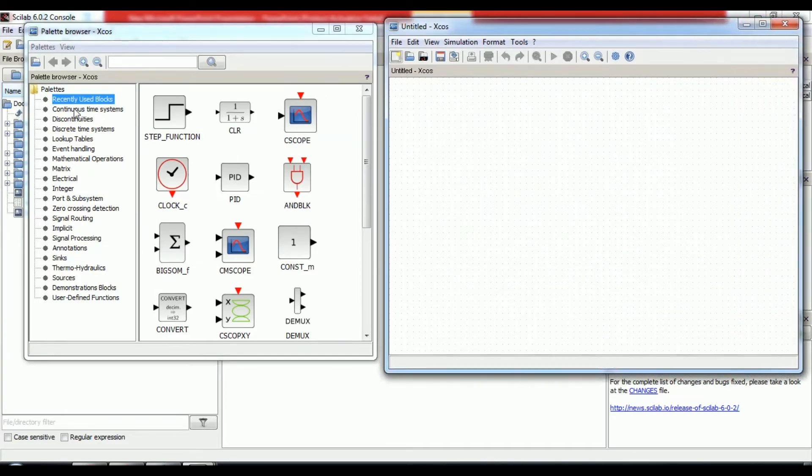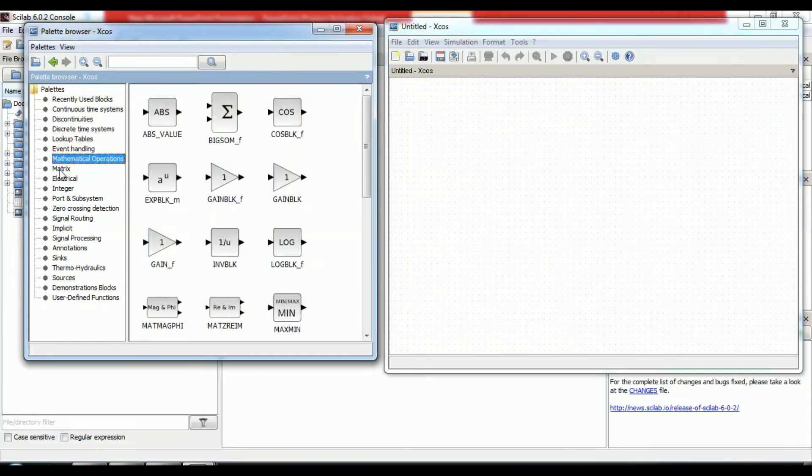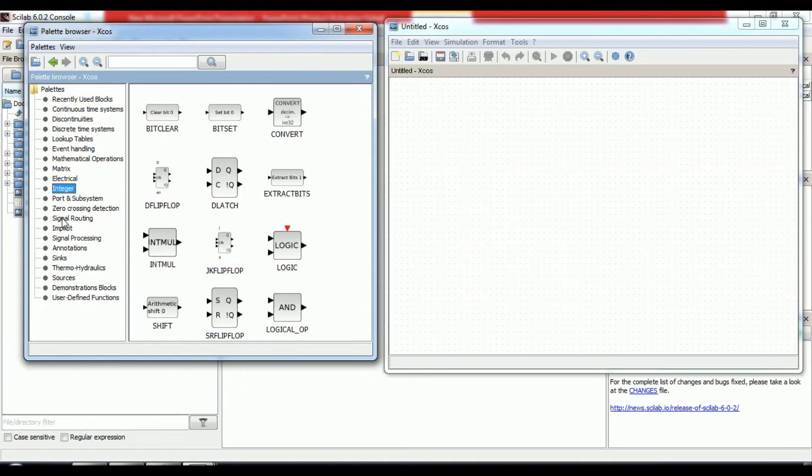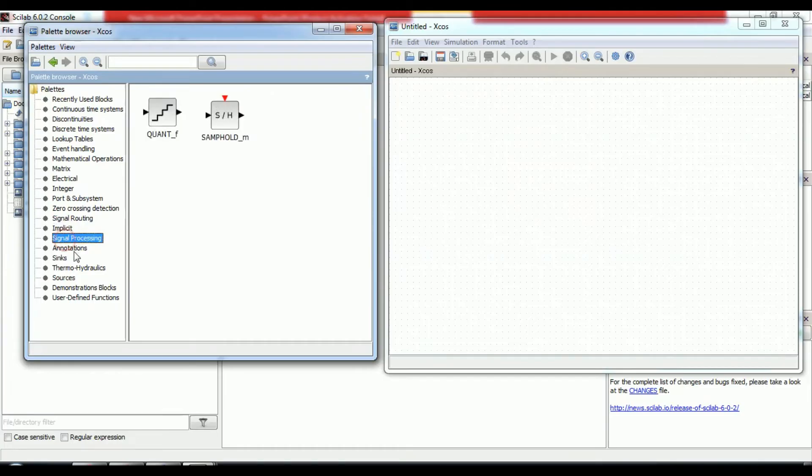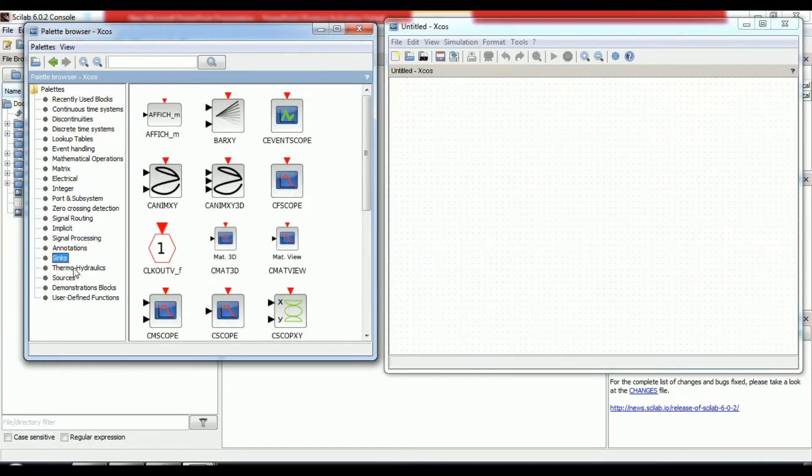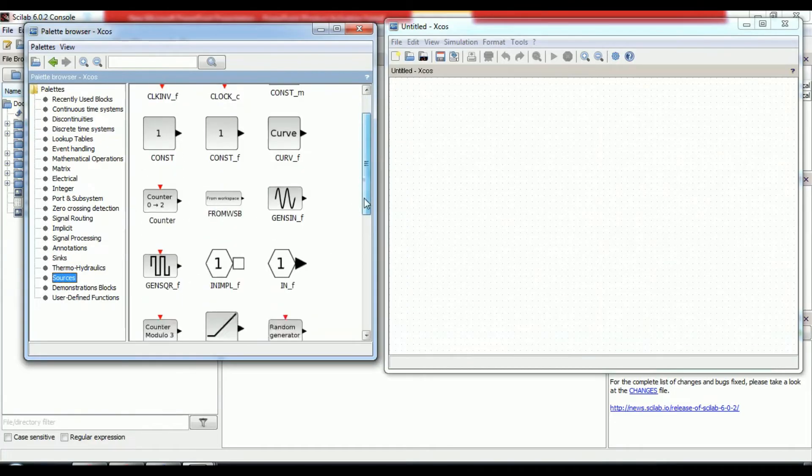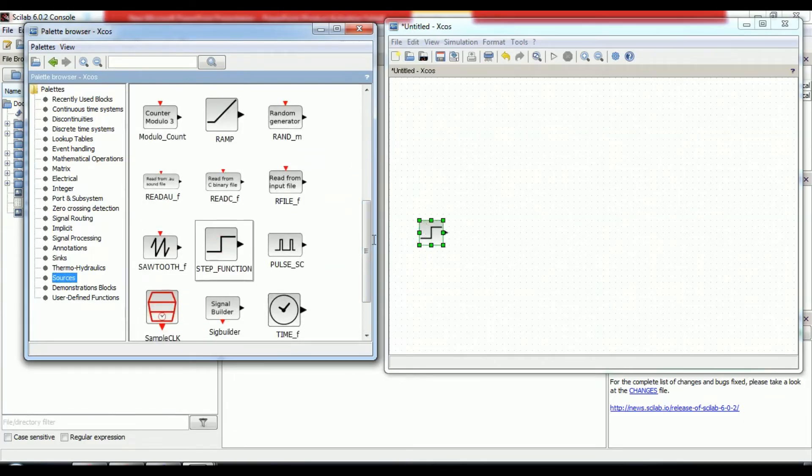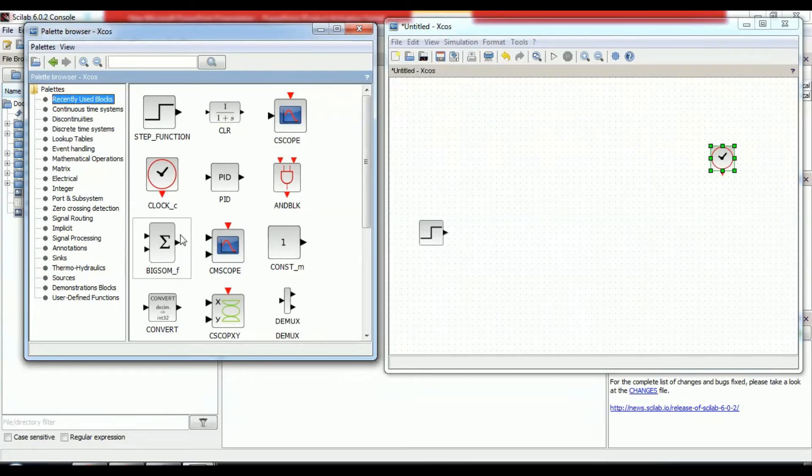Here, you get the different modules. From, we have to select the components which require to draw a closed loop transfer system for a given statement. We need here clock. Also, we need a step function. Just click and drag it in other window. Take one clock. Here, we get the recently used components. Summing point where signal get added and subtracted.